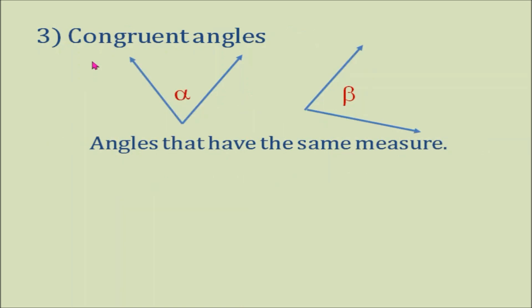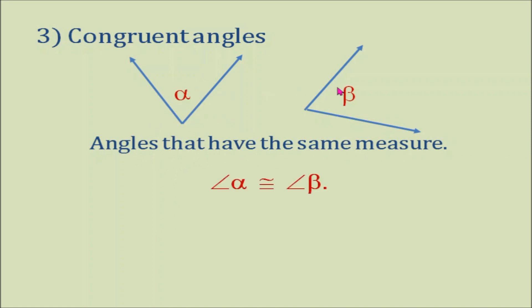Number 3: Congruent angles. Congruent angles are angles that have the same measure. Here, we have angle A is congruent to angle B.